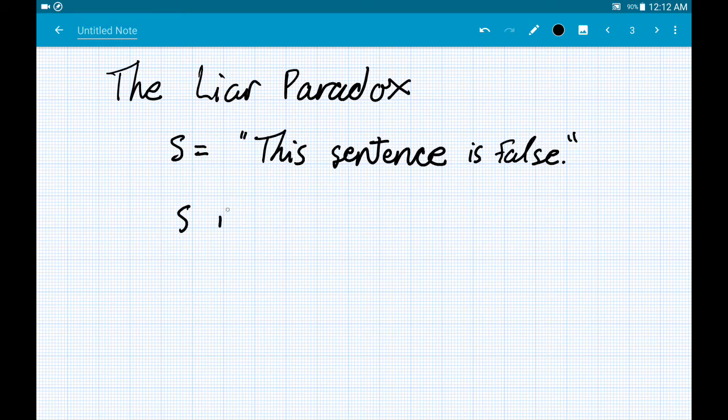So, suppose that S is true, what does that imply? Well, since it says that it's false, and it's true in saying that, that must mean that it's false. And that's a contradiction, so I'll use the lightning bolt symbol to denote a contradiction. I swear I've seen that somewhere before.